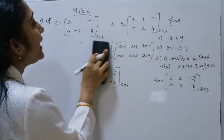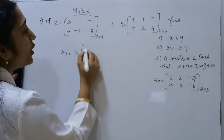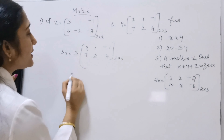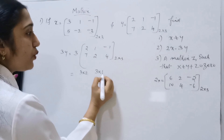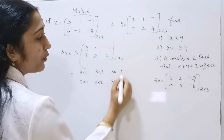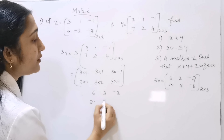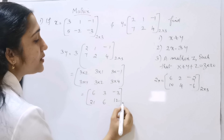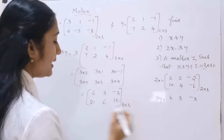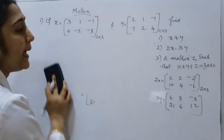Same way we compute 3Y. So 3Y equals 3 into the matrix [2, 1, -1; 7, 2, 4] — also a 2 by 3 matrix. That gives us: 3 into 2, 3 into 1, 3 into minus 1; then 3 into 7, 3 into 2, 3 into 4. The result is 3Y equals [6, 3, -3; 21, 6, 12]. So we now have both 2X and 3Y.